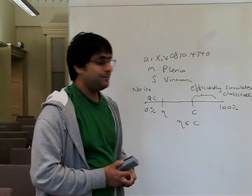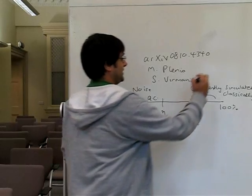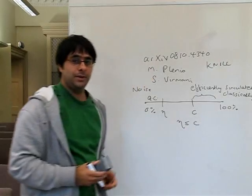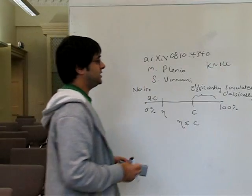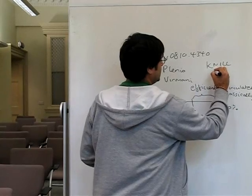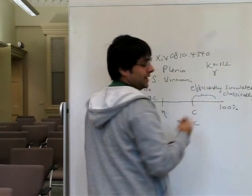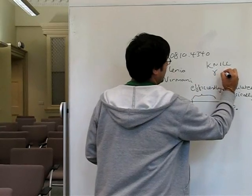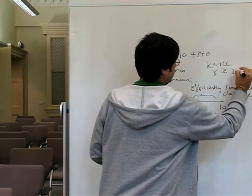Probably the most famous example of a fault tolerance scheme is the post-selected scheme proposed by Knill, which appeared in Nature, for which he conjectured for a certain type of depolarizing noise model, which he parameterized by γ, that the noise threshold could be as high or even higher than 3%.